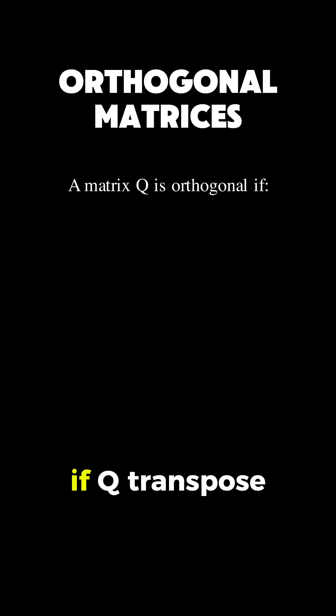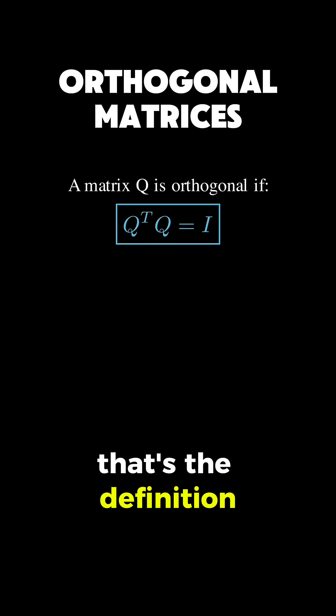A matrix Q is orthogonal if Q transpose Q equals the identity matrix. That's the definition.